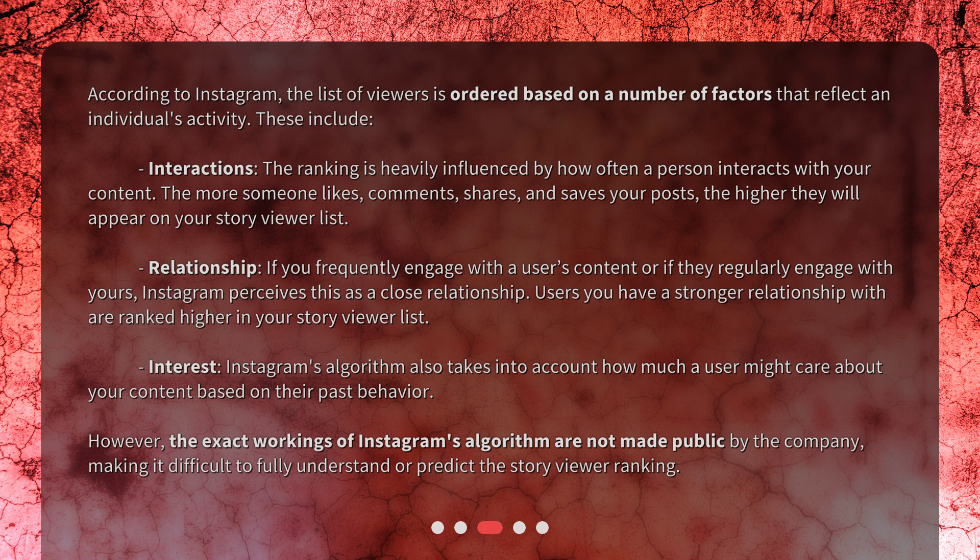Instagram's algorithm also takes into account interest — how much a user might care about your content based on their past behavior. However, the exact workings of Instagram's algorithm are not made public by the company, making it difficult to fully understand or predict the story viewer ranking.